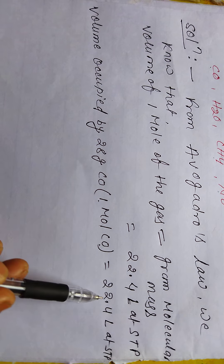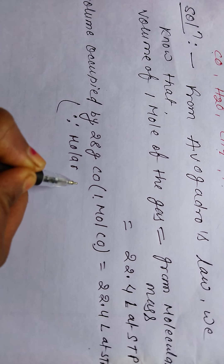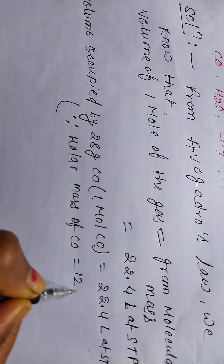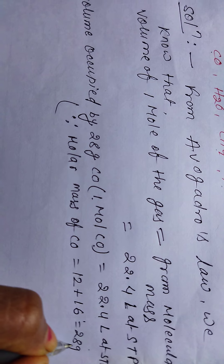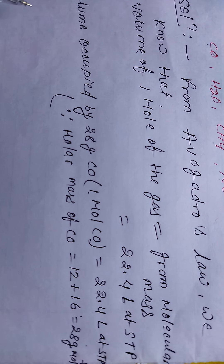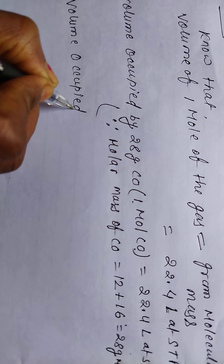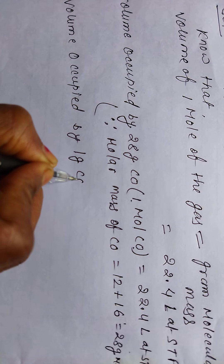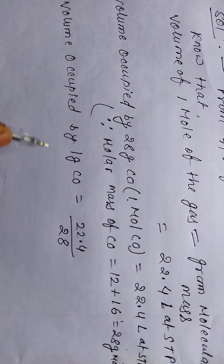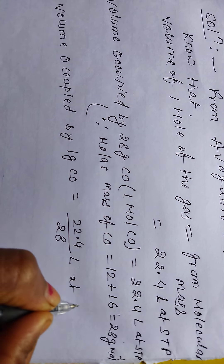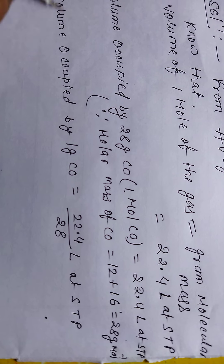For 1 mole of CO at STP, the volume is 22.4 liters. The molar mass of CO is 12 (carbon) plus 16 (oxygen) = 28 g/mol. Therefore, the volume occupied by 1 gram of CO = 22.4/28 liters at STP.